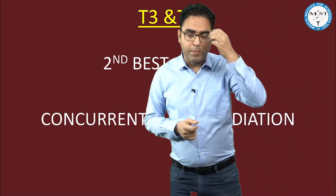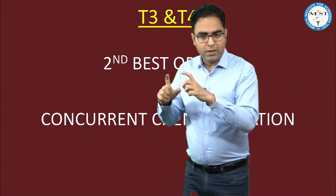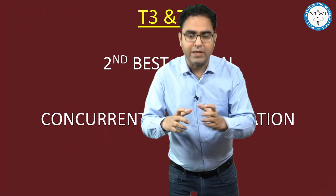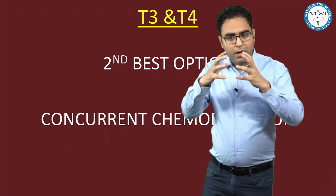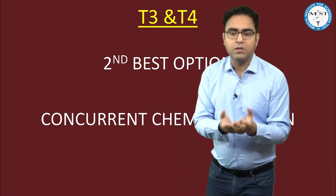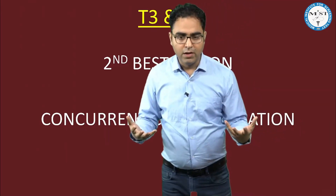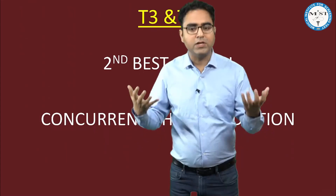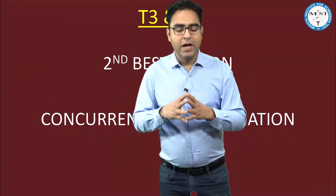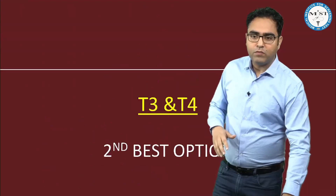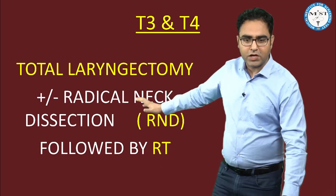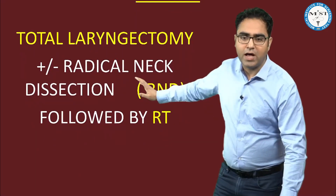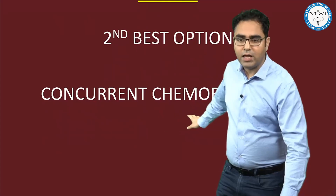Let's revise the summary once again. T1: radiotherapy, but for T1 glottic cancer laser surgery is the preferred treatment nowadays. T2: radiotherapy is the treatment of choice; second best option is partial laryngectomy — horizontal partial for T2 supraglottic, vertical partial for T2 glottic — prerequisite: normal lung function. T3 and T4: best treatment is total laryngectomy plus/minus radical neck dissection followed by radiotherapy; if patient unwilling or unfit, the second best option is concurrent chemoradiation.